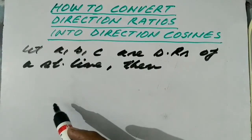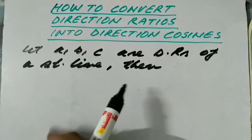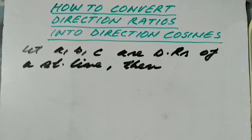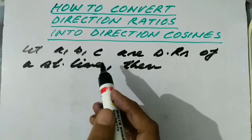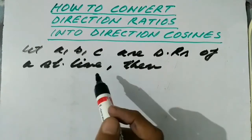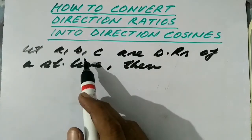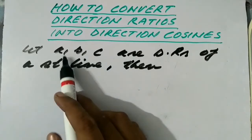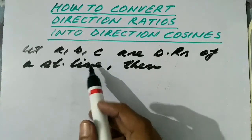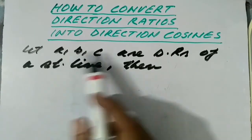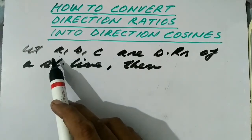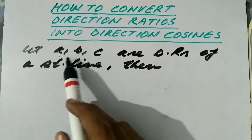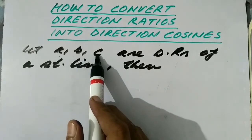Now we are going to discuss how to convert direction ratios into direction cosines, as this is often necessary in the study of three-dimensional coordinate geometry. If A, B, C are the direction ratios of a straight line, in order to convert them into direction cosines, we need to divide each direction ratio by the square root of the sum of the squares of the direction ratios.